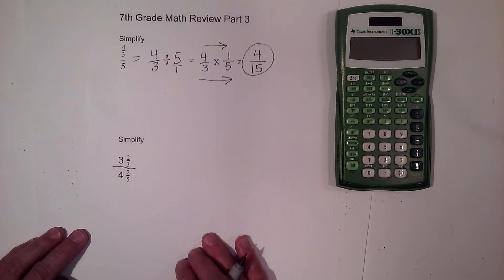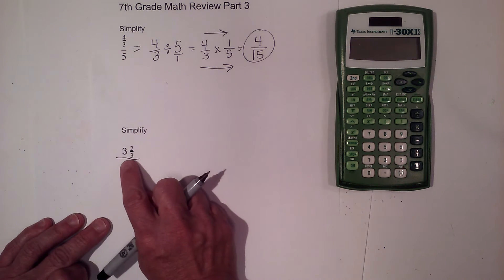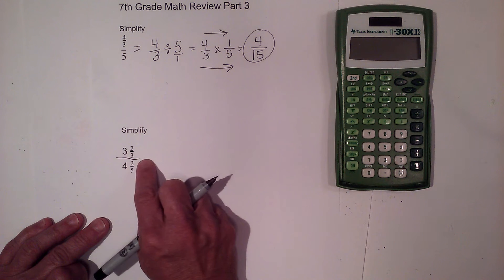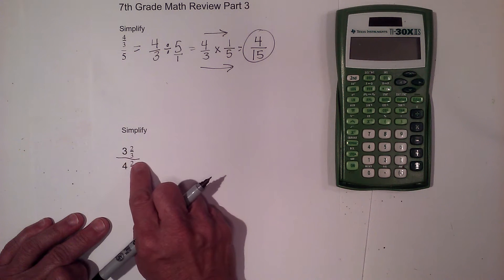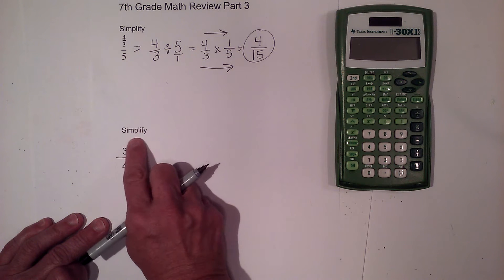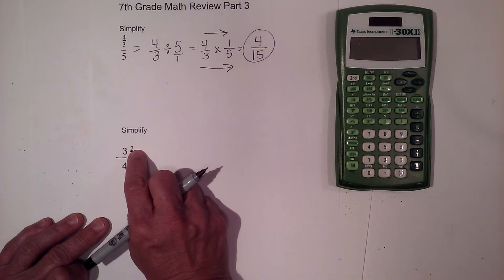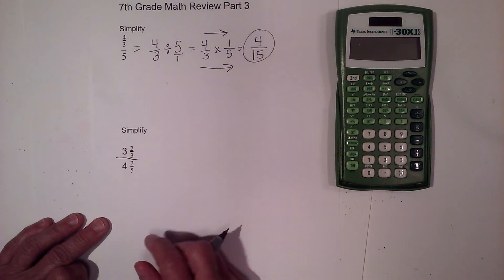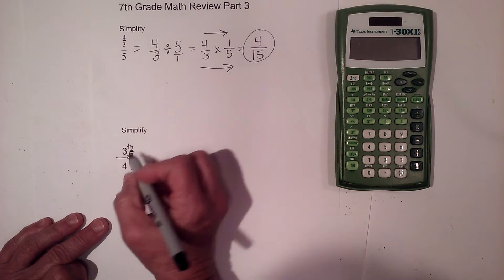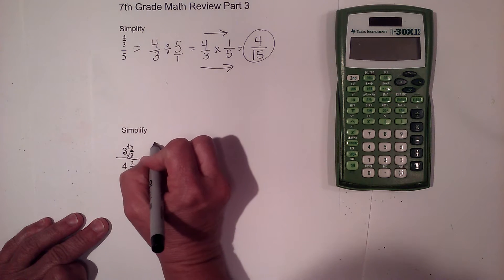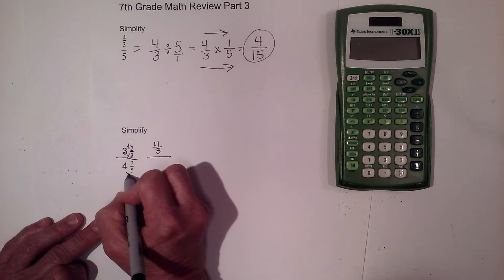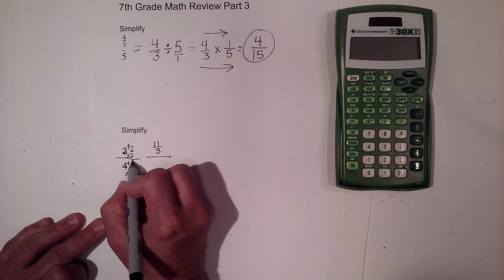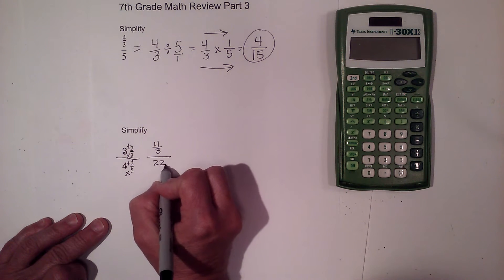So it's just 4 fifteenths. We have a similar problem down here. We have 3 and 2 thirds divided by 4 and 2 fifths. Now the problem with this division problem is we have mixed numbers, meaning a whole number and a fraction. So I'm going to use the circle trick first. I'm going to multiply and then add. So 3 times 3 is 9, plus 2 is 11. So that's eleven thirds.